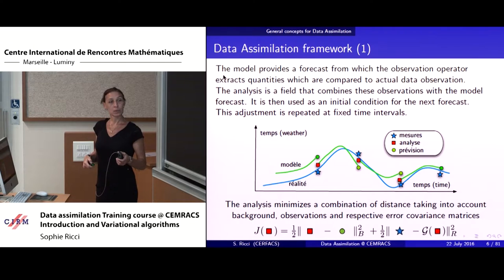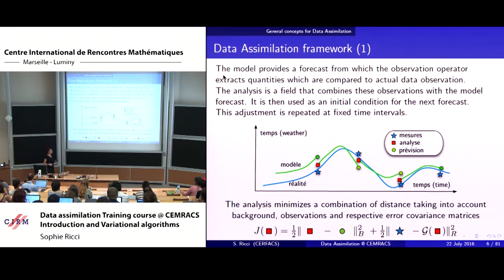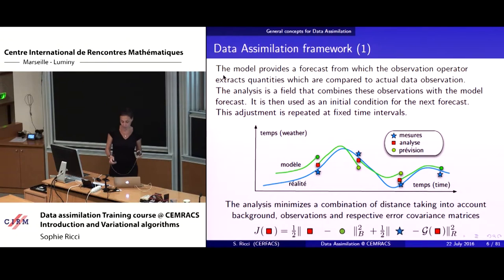The matrices B and R give you an idea of the errors — the uncertainty on whatever information you're going to use. The B matrix is the background error covariance matrix. The background is whatever the model says, and B provides a description of the statistics for the background errors. R is the equivalent but for the observation. If it's not clear, let me know so I can make it clearer — it's going to be tricky otherwise in the following.